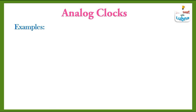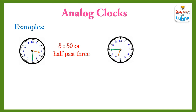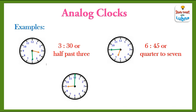A few more examples of analog clocks are given. What time is shown in this analog clock? It's 3:30 or half past 3. What time is shown in the second analog clock? It's 6:45 or quarter to 7. Look at the third analog clock. What time is shown in this clock? It's 9 or 9 o'clock.